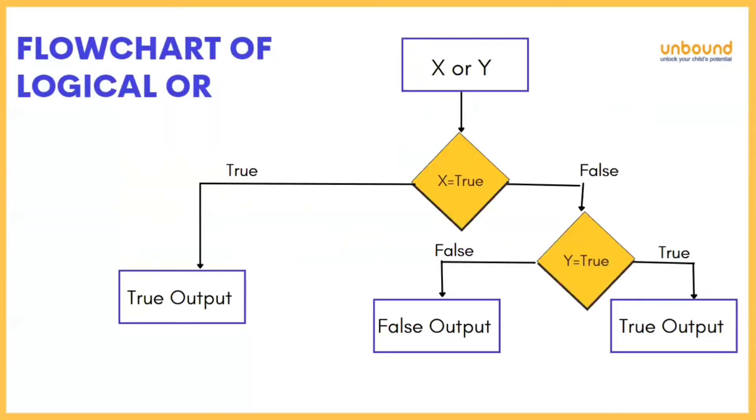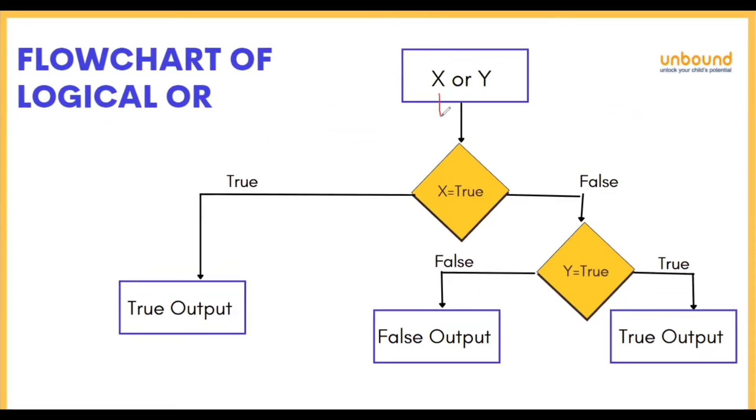Here we have flowchart for logical OR. Any one condition should be true to get a true output. Now as our x got false, so it will move to this area.